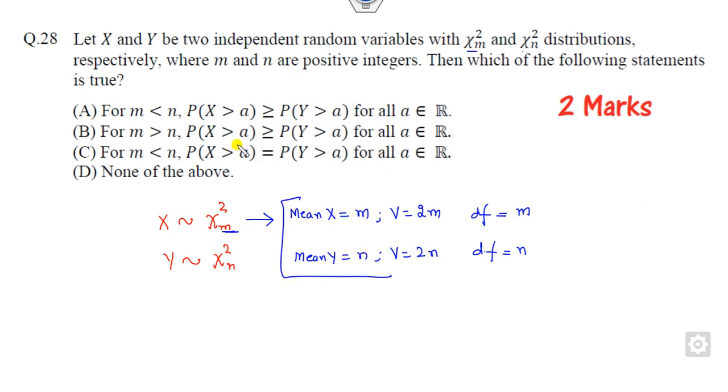What is the relation between the degree of freedom and the probability? Very simple rule: whenever the degree of freedom is greater, the probability of that variable is greater than the other. That's a simple rule. So here, if m is less than n, the probability of X is less than the probability of Y, because n is corresponding to Y. But here is the reverse, so this option is cancelled.